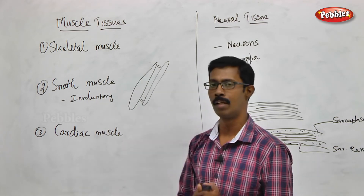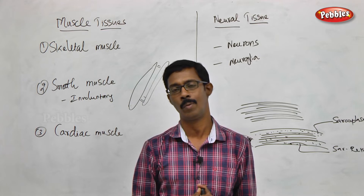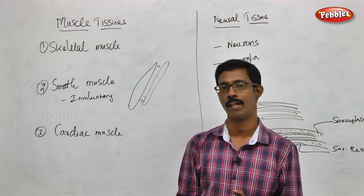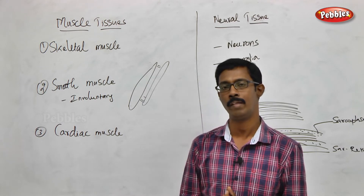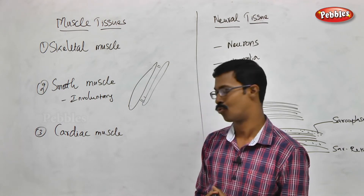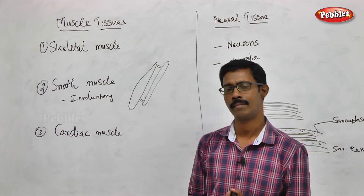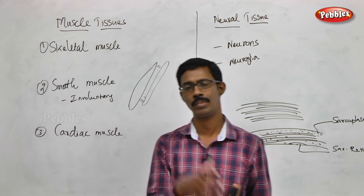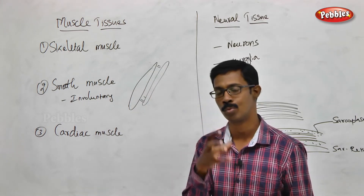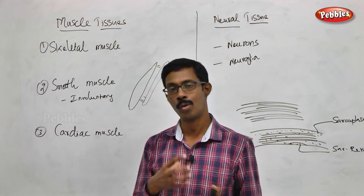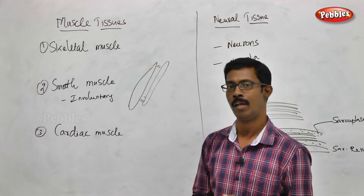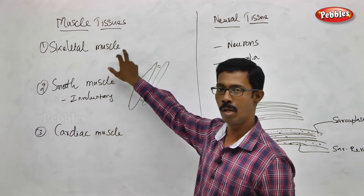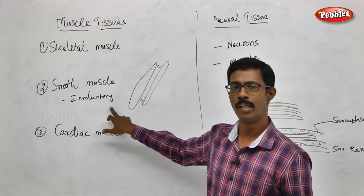But smooth muscles are different. Smooth muscles are found in the internal tract — in the digestive tract, in mucus membranes, lining internal organs. By thinking, you cannot control smooth muscles. We cannot perform particular control over them voluntarily. Smooth muscles are involuntary muscles, while skeletal muscles are voluntary muscles.